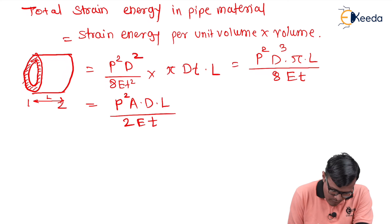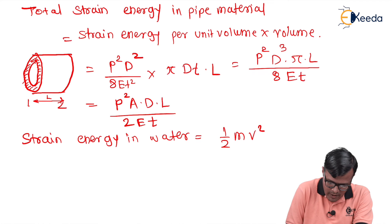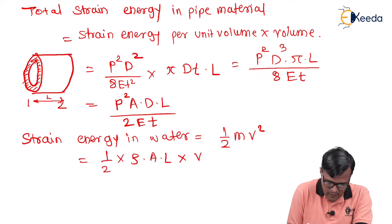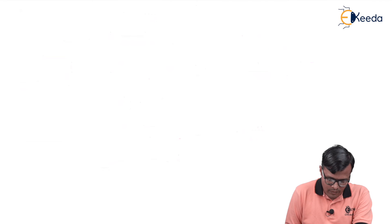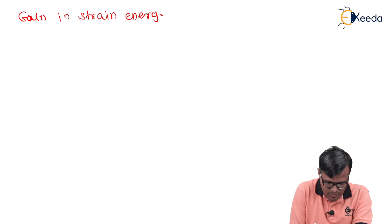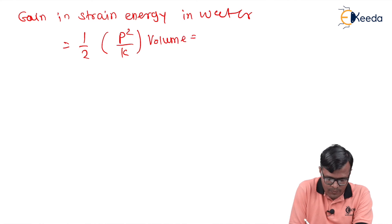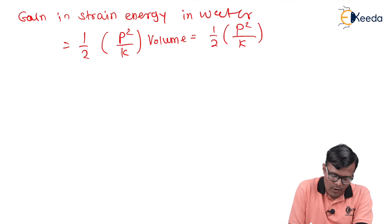Strain energy in water = (1/2) m v² = rho × A × l × v². We can also calculate the gain in strain energy in water as (1/2) × (p²/K) × volume, where volume = A × l.